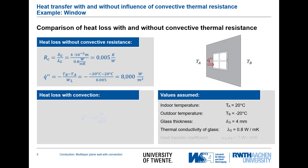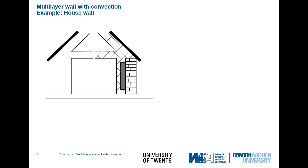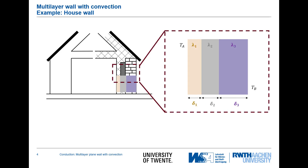Now let's look at heat loss with convection. To do this, we increase the complexity a little and look at the three-layer wall from our prior lectures. We have an indoor temperature TA directly at the wall and outer temperature TB also directly at the wall, with three different layers where lambda_2 is a low-conductivity insulation. The temperature profile shows straight lines under steady-state conditions with no heat sources.